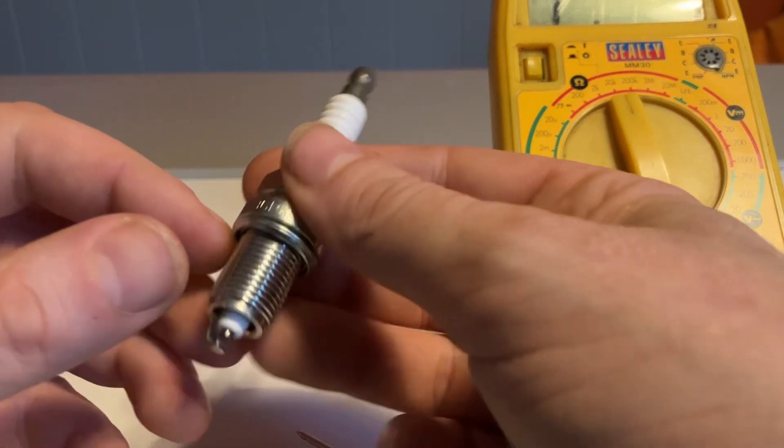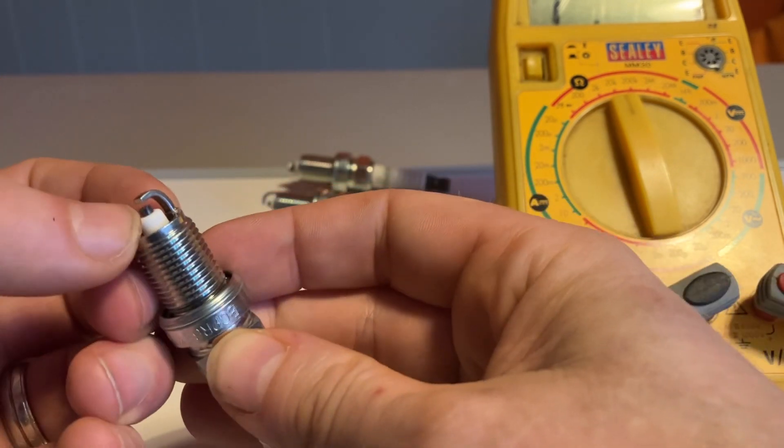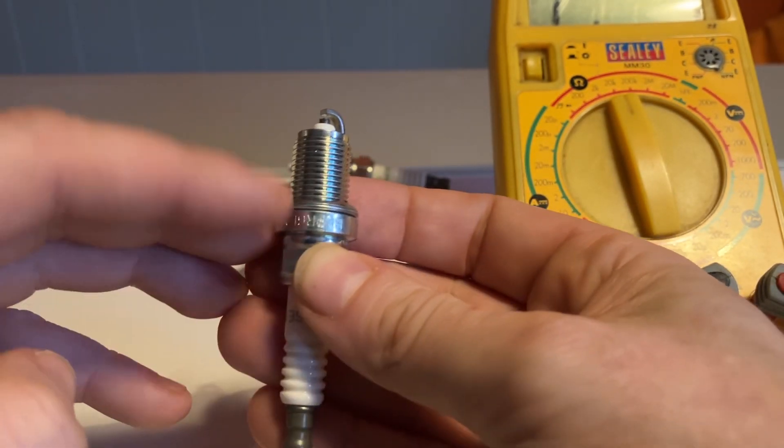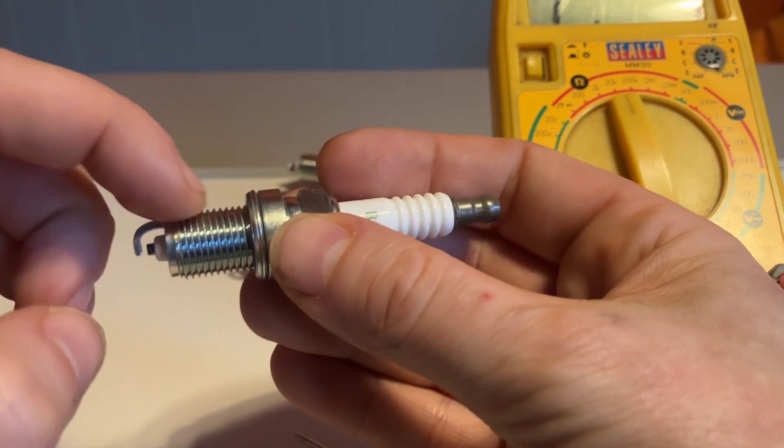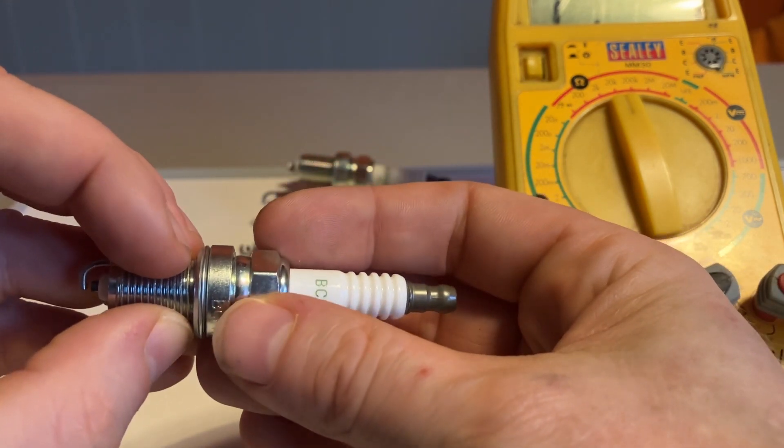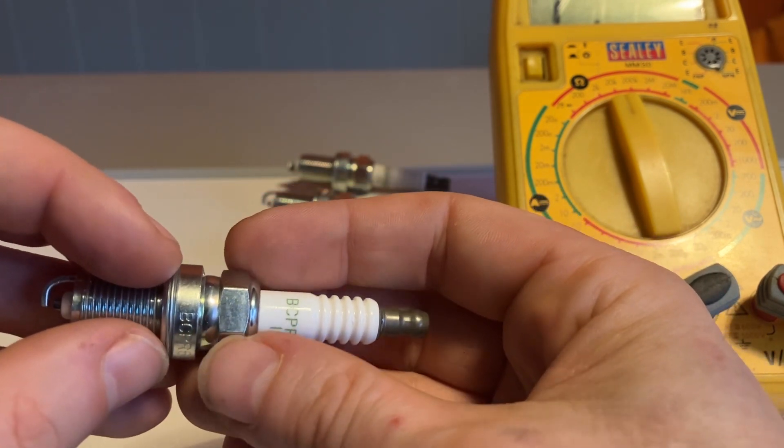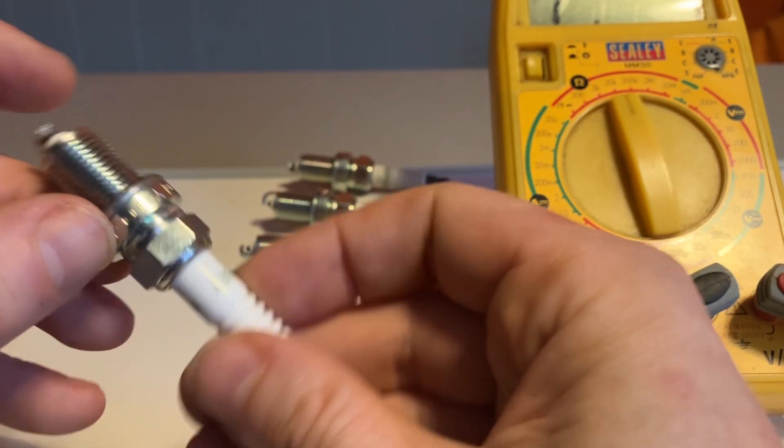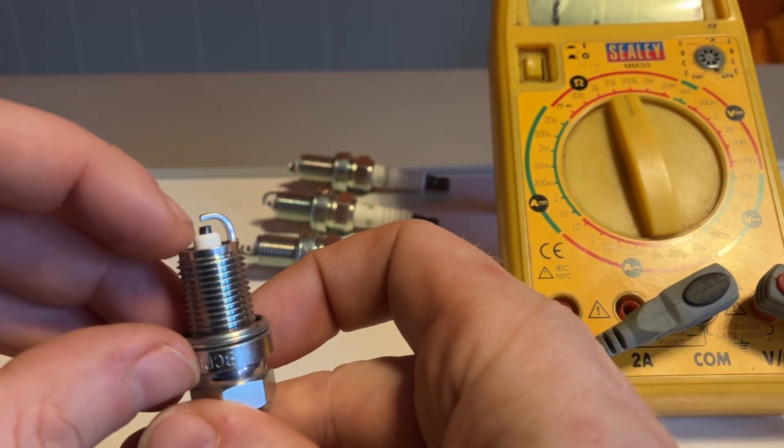It's just worth mentioning the construction of the spark plug. The high voltage comes down here, it goes to the little tip here, and then it jumps across. So you think of that the positive side, if you like, jumps across to the electrode tip here and then down the body. And this is screwed into the engine block, or the cylinder head, sorry. So this is earthed to the engine, so you've got your positive side, if you like, and then your earth return is the actual body itself.